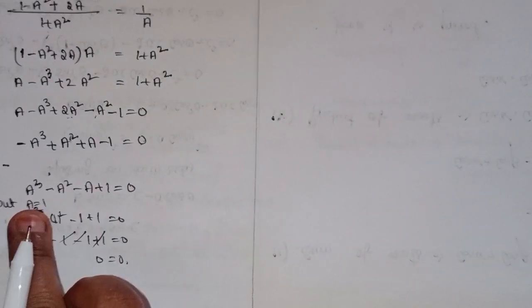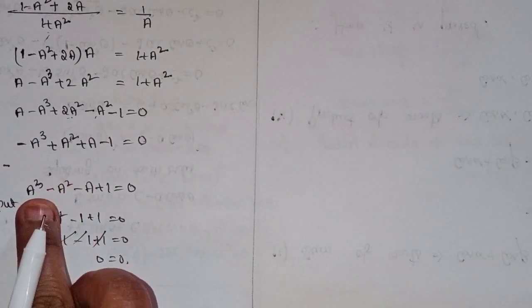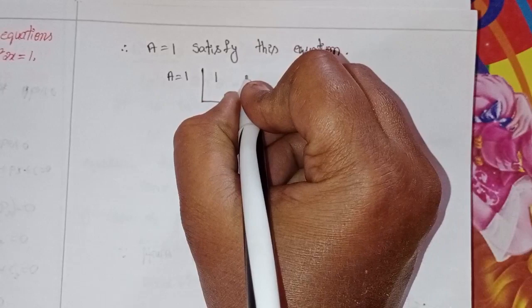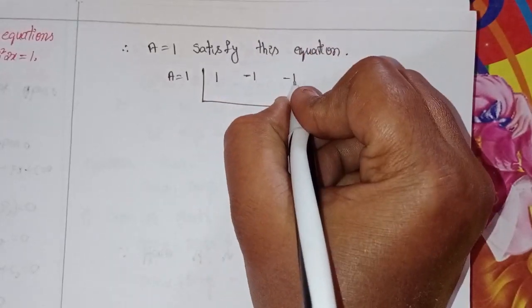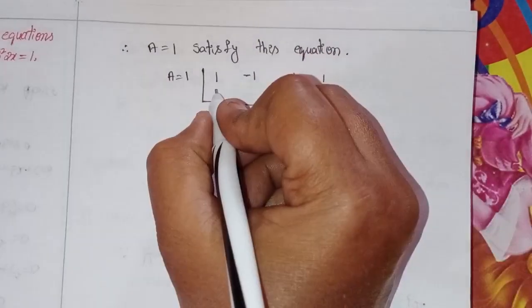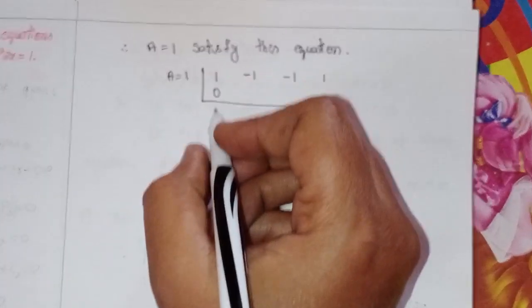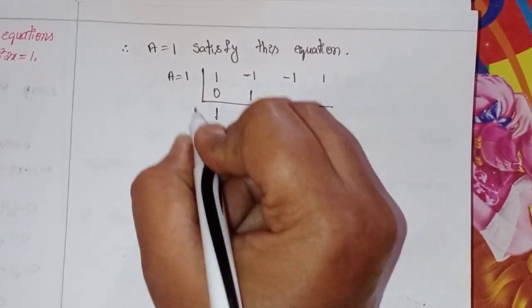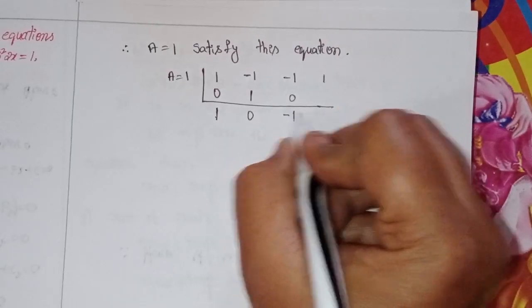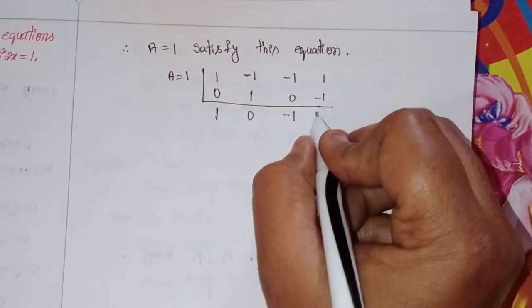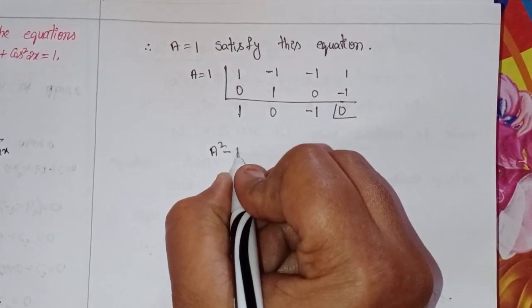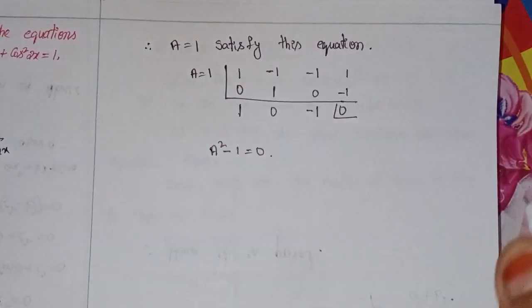Here the a³ coefficient is 1, a² coefficient is minus 1, a coefficient is minus 1, and constant is 1. Using synthetic division with root a equal to 1: we get the quotient a² minus 1 equal to 0.